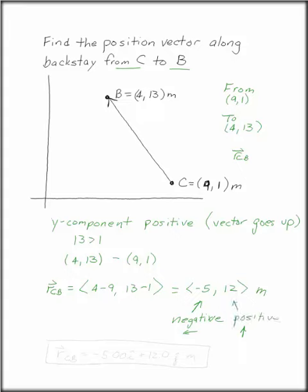If you had gotten it backwards and took 9-1 minus 4-13, you would have a vector that was going in the other direction. So our answer, if we put it in three significant digits, is negative 5.00i plus 12.0j meters.